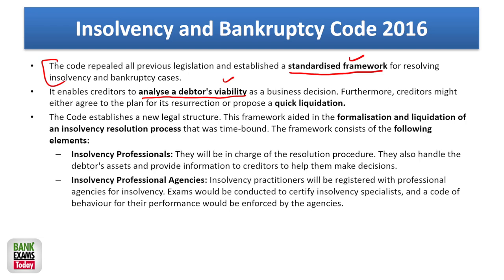The code enables creditors to analyze the debtor's viability as a business decision. The debtor who has taken money and is unable to pay debt back — unable to service the debt, not paying EMIs — the creditors then check whether the business can be turned around or whether to go for quick liquidation: sell off the assets and pay whatever is possible. In most cases, banks or creditors go for quick liquidation. The code establishes a new legal structure with a proper procedure.